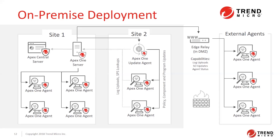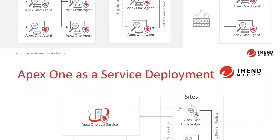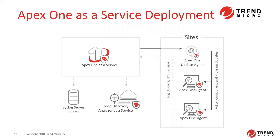The edge relay in the DMZ handles log uploads, suspicious object updates, and agent status updates to and from external agents. If using Apex One as a service, you can also leverage the Apex One update agent for policy, component, and program updates, while log uploads and smart protection are still uploaded directly to Apex One as a service. You can also leverage our cloud sandboxing — Deep Discovery Analyzer as a service — and forward syslogs to a SIEM.